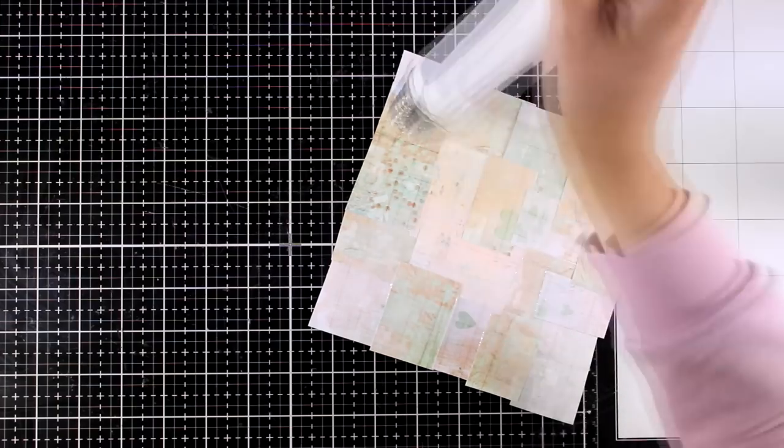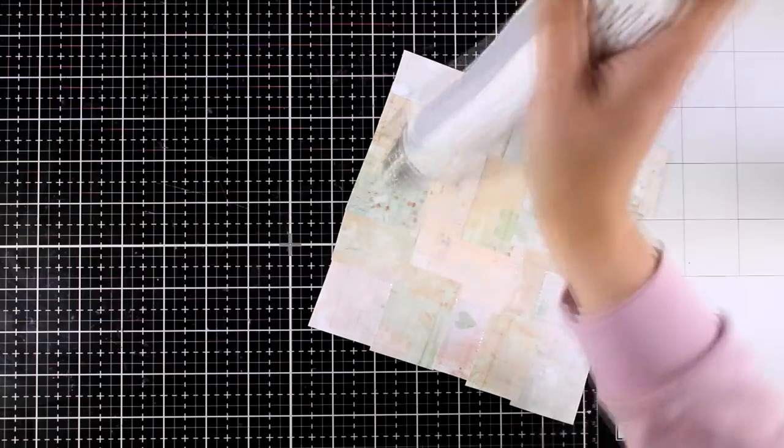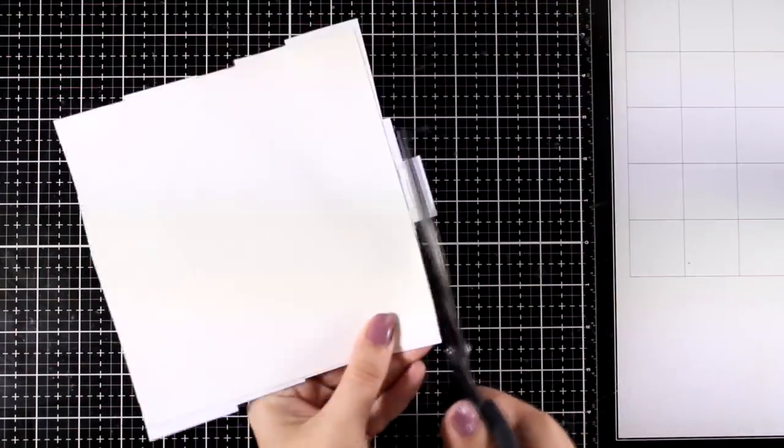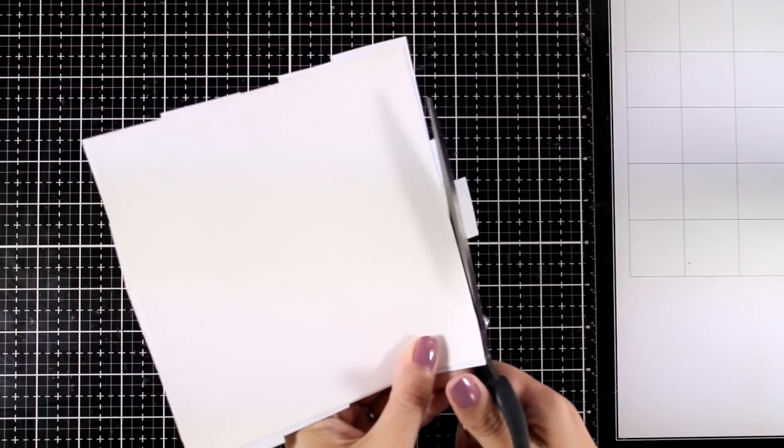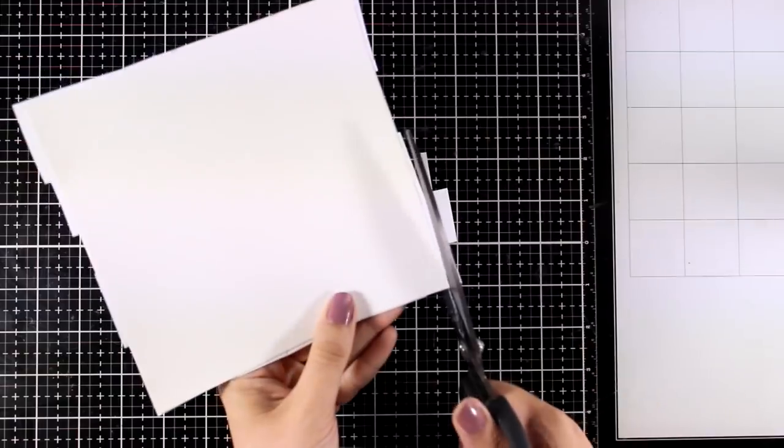Once I cover the whole panel, I'm using my heat gun to make sure that everything is completely dry, and then I will use my scissors to cut off the excess. Of course, you can use your paper trimmer in this stage. I just need to make sure that this is nice and tidy all around since I am going to frame it.